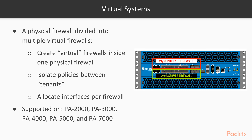With virtual systems, Palo Alto can create virtual instances inside the physical device. On a firewall like this 5280, I can allocate a set of interfaces to one virtual firewall and another set to a different instance. If we want to apply policies related to the internet, we apply them to the internet virtual system; for the server firewall, we apply them to virtual system number three. In this case, you don't need to buy another appliance specifically for server firewall traffic — you can just create a virtual system inside the physical Palo Alto.